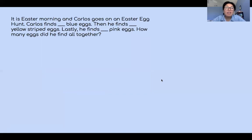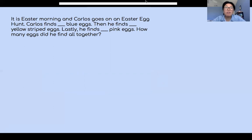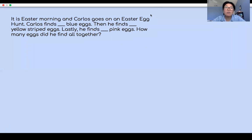It is Easter morning and Carlos goes on an Easter egg hunt. Carlos finds blue eggs, then he finds yellow striped eggs, and lastly he finds pink eggs. How many eggs did he find all together?